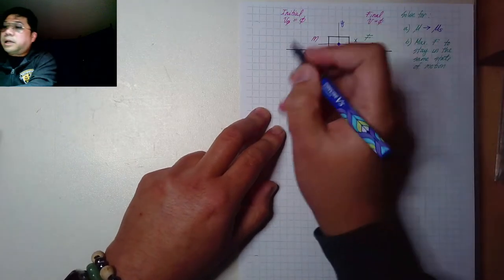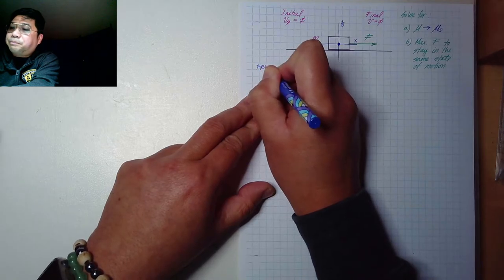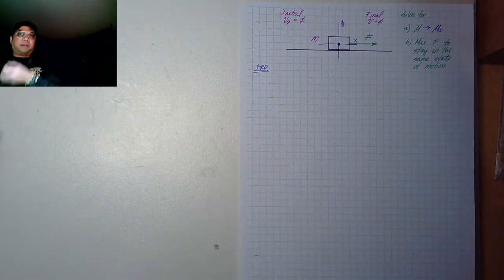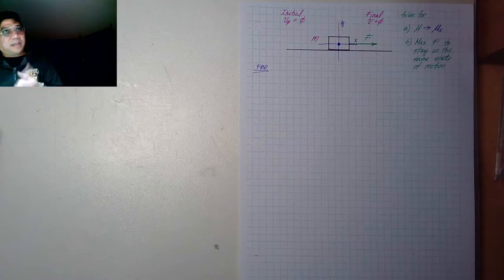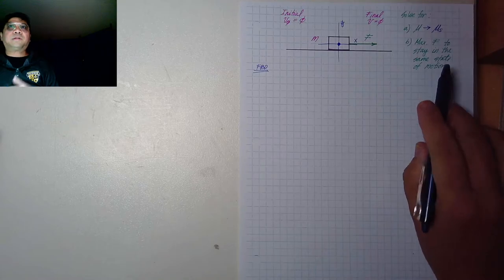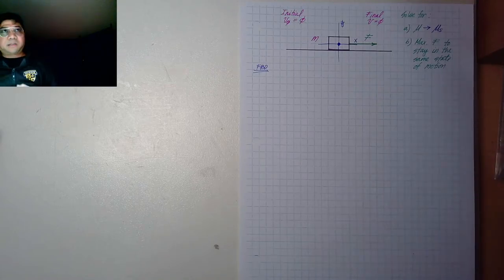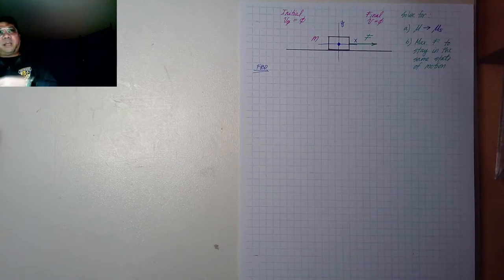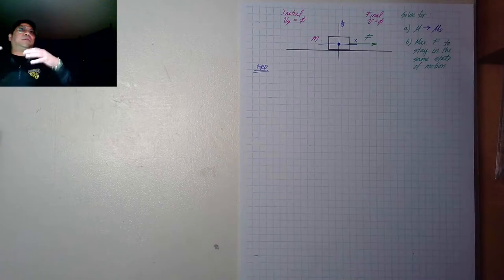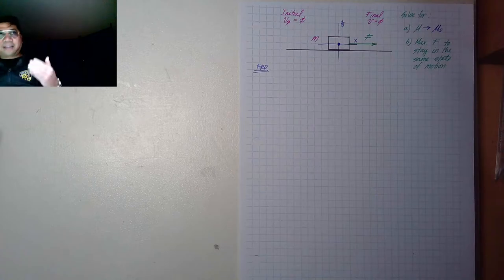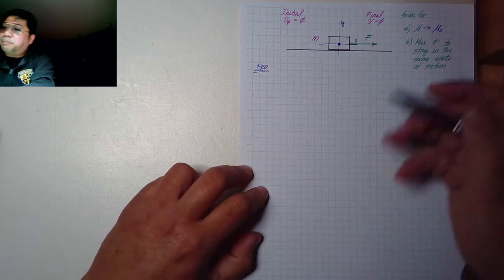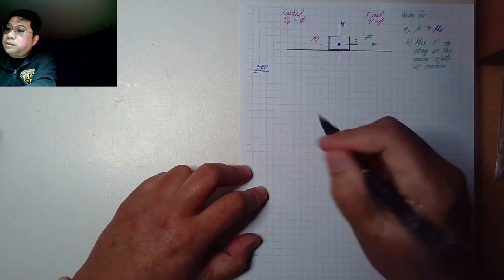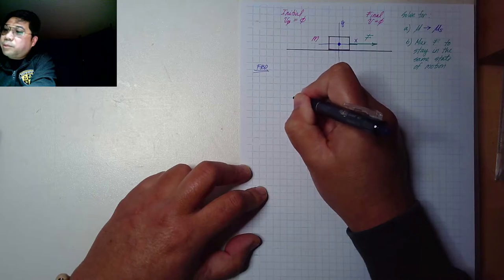Now let's draw our free body diagram correctly. Make sure you scale it correctly — if the block is not changing its state of motion, whatever the velocity is from the beginning to the end should not change. This means the net force is zero, or the forces acting in opposite directions are equal, according to Newton's first law of motion.